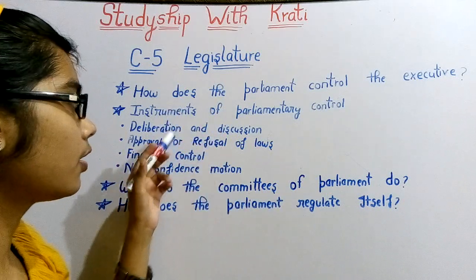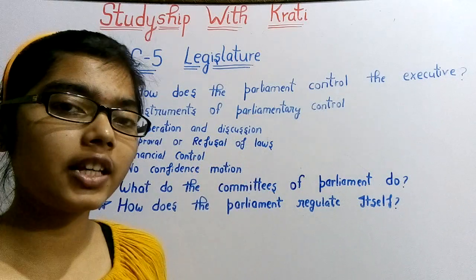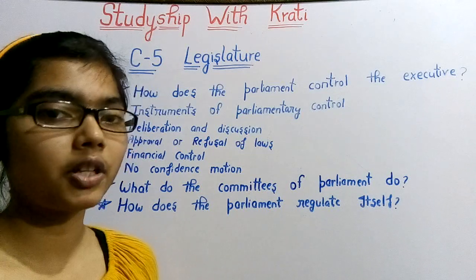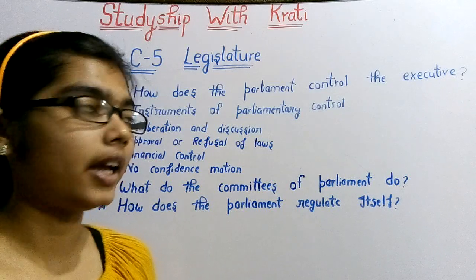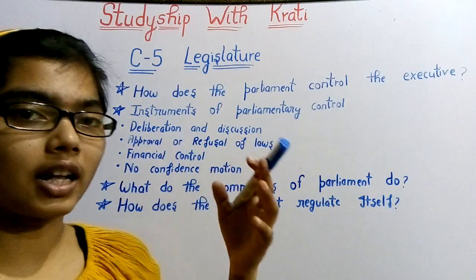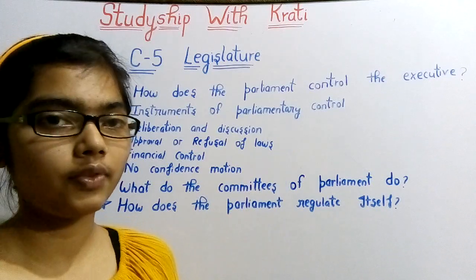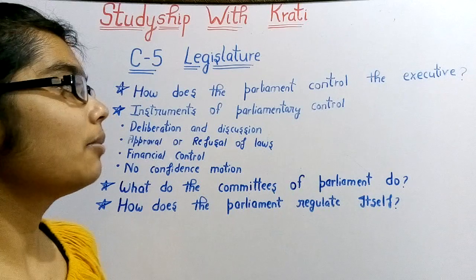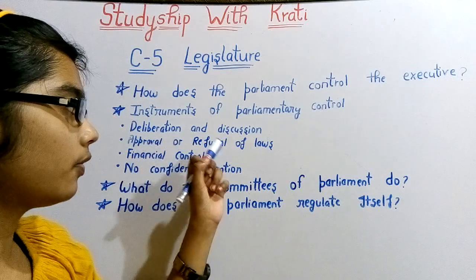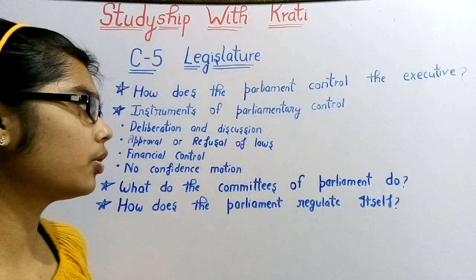The next instrument is approval and refusal of laws. The work of Parliament is to approve laws and refuse laws. The cabinet ministers propose laws, and the rest of the members debate them. If the government's proposal is approved or refused, that is a form of parliamentary control. So approval and refusal of laws is an important function.